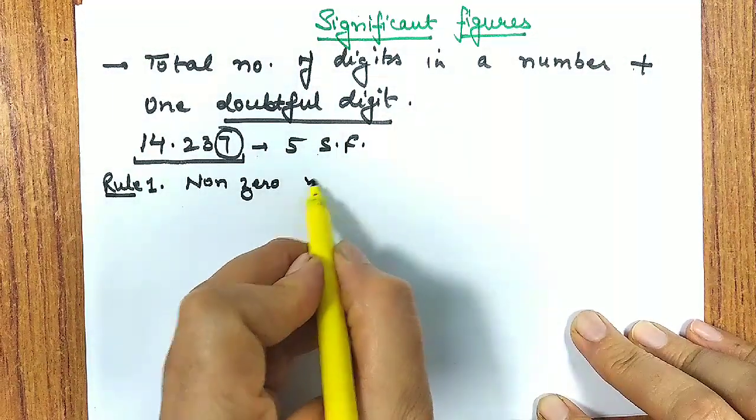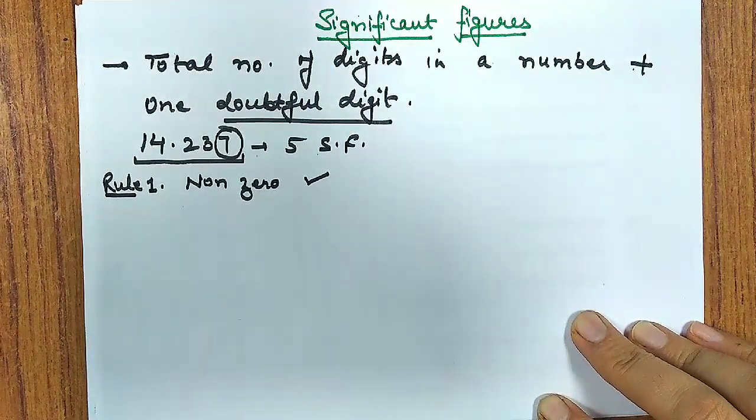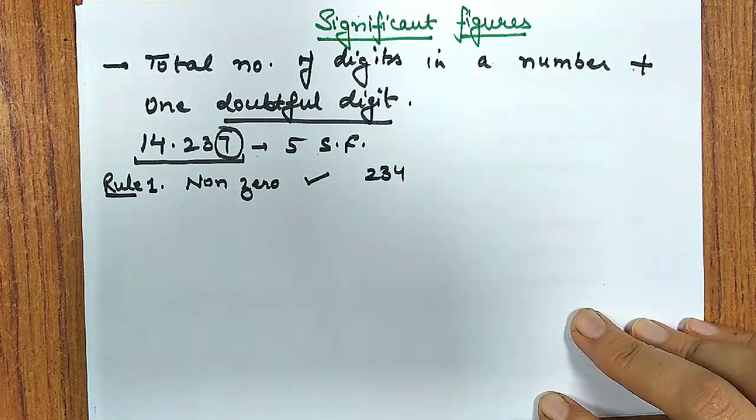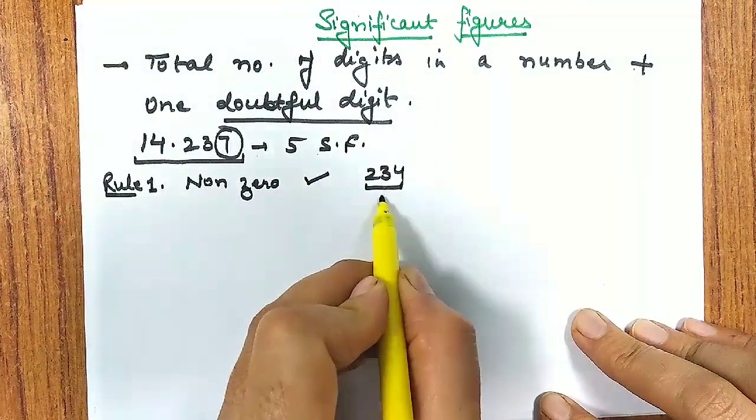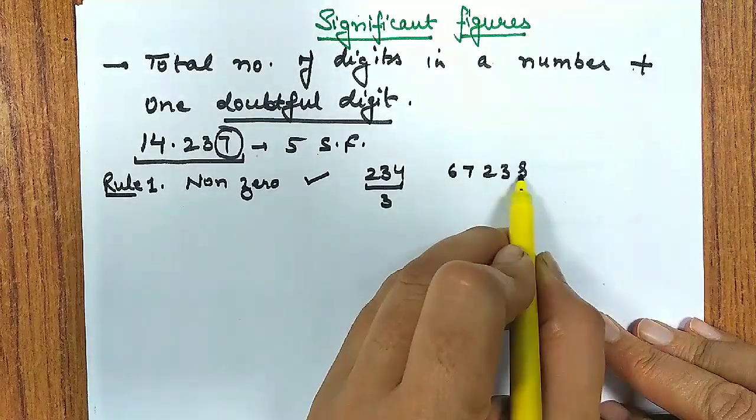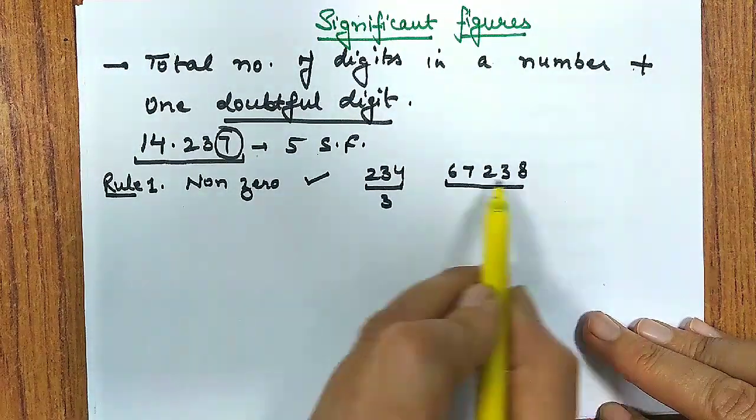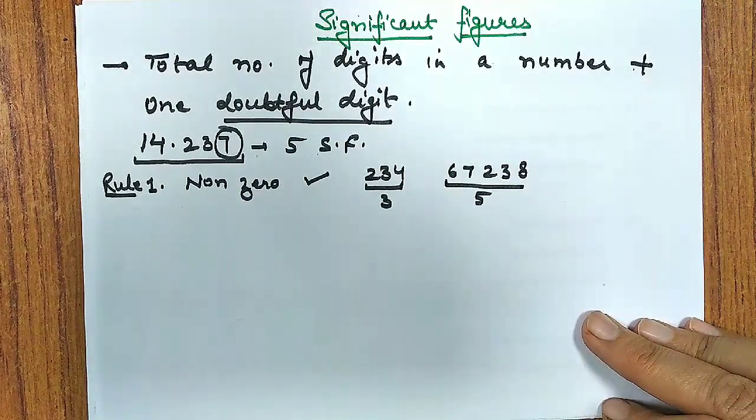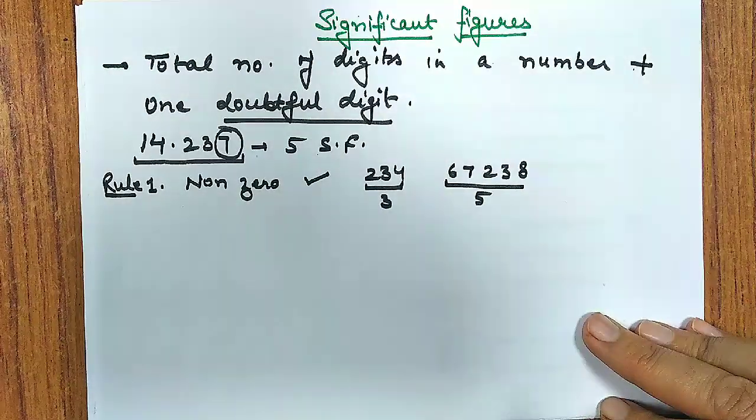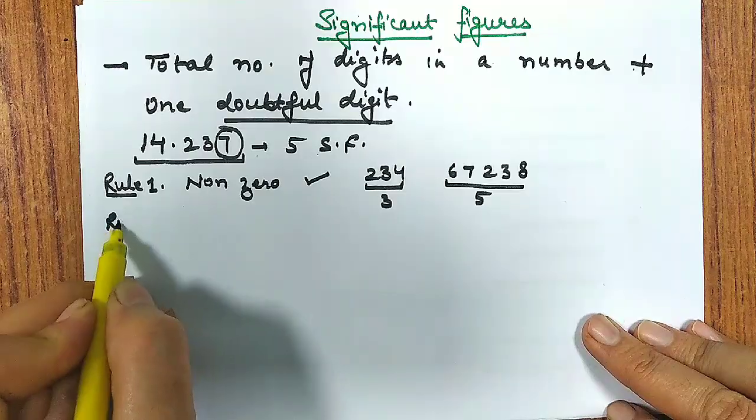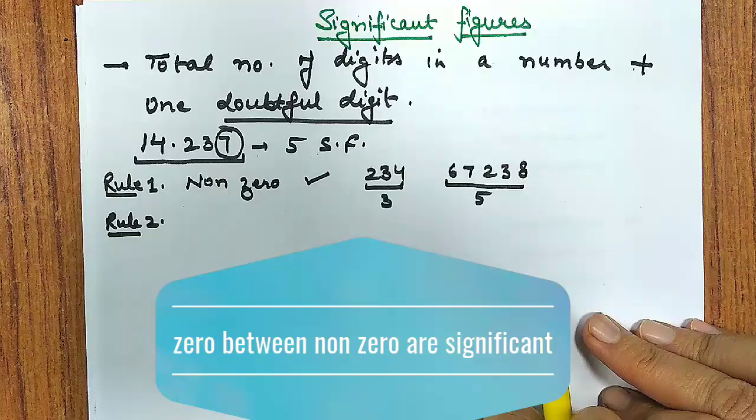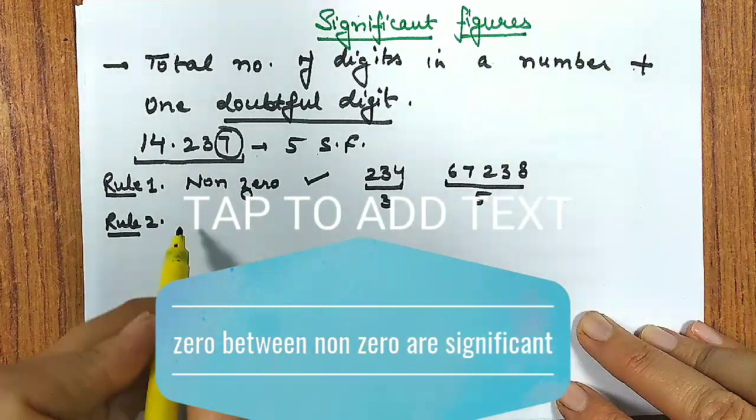When I talk about significant figure, it is total number of digits including one doubtful digit. The last digit is doubtful - it may be 3.6, it may be 3.8, it may be between 6 and 8. Now let's talk about the rules. How to find out the significant figure? Rule number 1: all non-zero digits are significant.